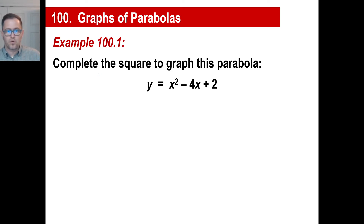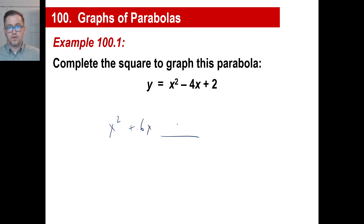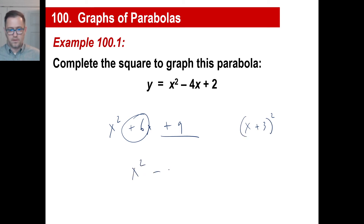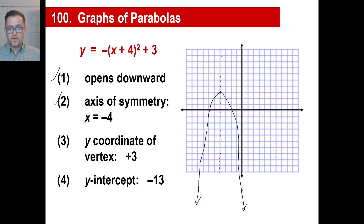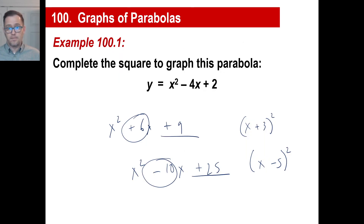Now we're going to have to complete the square on this one. Remember completing the square? If you had x squared plus 6x, you take half of 6 which is 3, square it to get 9, and you could write that as (x plus 3) squared. Or if you had x squared minus 10x, half of negative 10 is negative 5, negative 5 squared is plus 25, and you'd write that as (x minus 5) squared. That's what we're aiming at — getting the equation into the form with something squared.